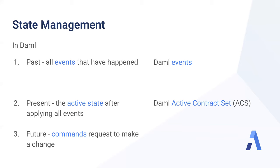Anyone running a node on a DAML network can query the active contract set — what is the current state of the system? All of the requests to make a change to a DAML ledger are called DAML commands, and anyone running a node has an API to submit commands, or in many cases they can do this through some graphical user interface or web browser.